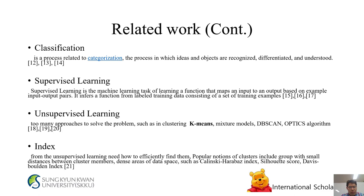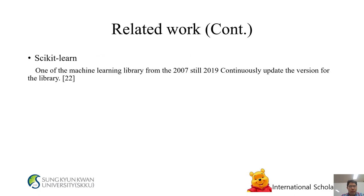Index: From unsupervised learning, to efficiently find clusters, notions include groups with small distances between cluster members, dense areas of data space, such as the Calinski-Harabasz Index and Davies-Bouldin Index. Scikit-learn is one of the machine learning libraries, continuously updated from 2007 to 2019.